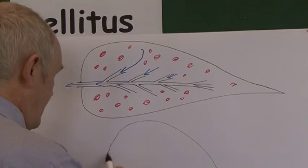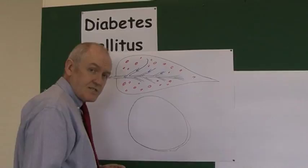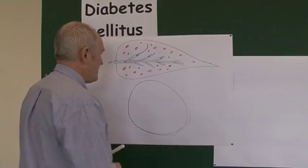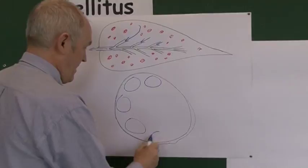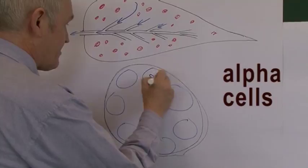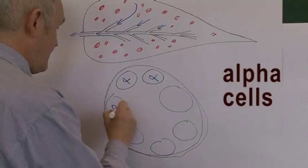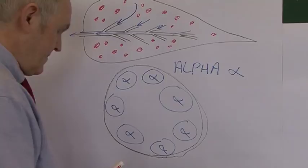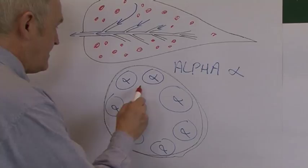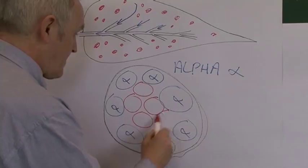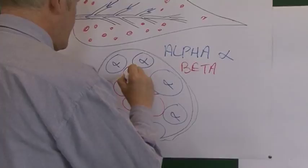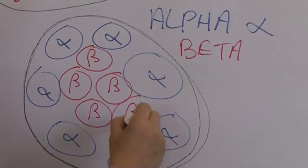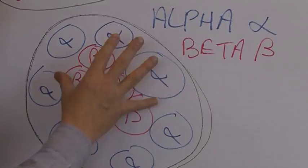If we look at one of these islets under larger magnification, we can see there are two main sorts of cells. Around the outside, mostly, there's a type of cell called an alpha cell — written with the Greek letter alpha. Mostly towards the centre of the islet, there's another sort of cell called a beta cell — the Greek letter beta. These beta cells are the main cells that detect the levels of sugar in the blood.